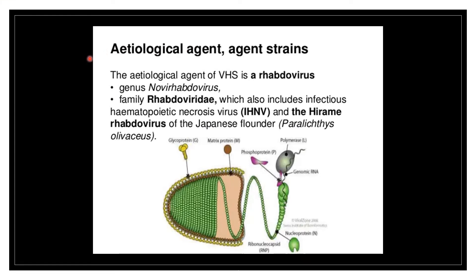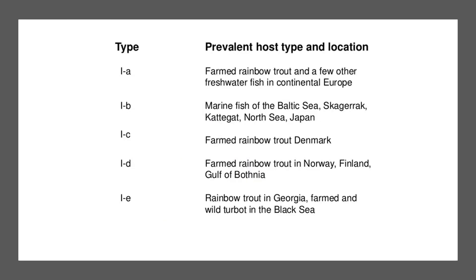The etiological agent of VHS is a rhabdovirus belonging to the genus Novirhabdovirus, family Rhabdoviridae, which also includes the causative agent of IHN, the infectious hematopoietic necrosis virus. The virus has four genotypes designated as genotype 1, 2, 3, and 4.